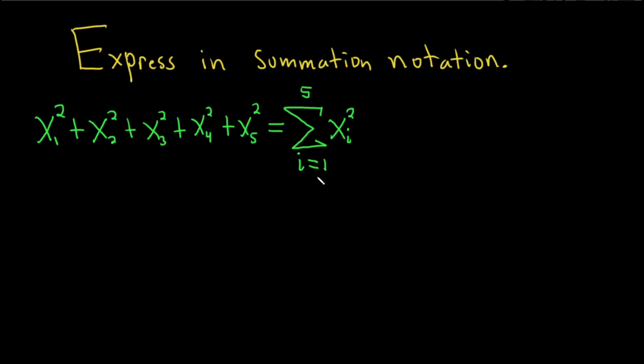And this basically means this, right? If you plug in 1, you get x₁². The symbol tells you to add, so plus. Then you plug in 2, you get x₂². Then you add, then 3, etc. So really nice notation. What if we had something like this?